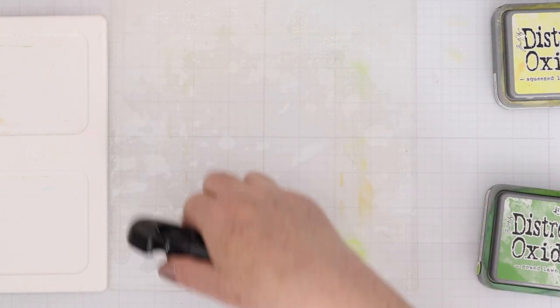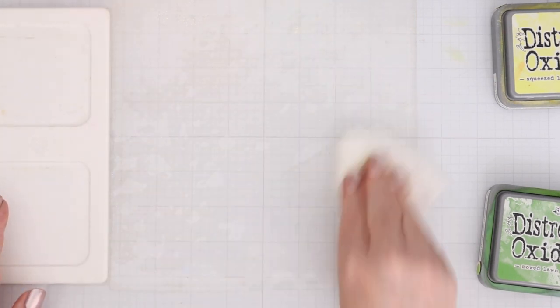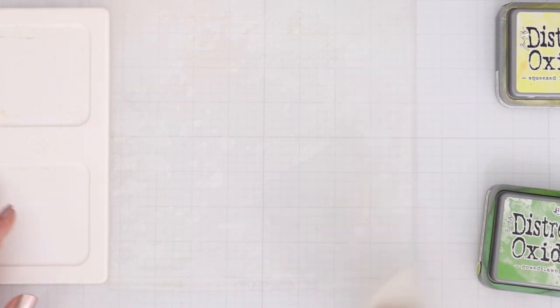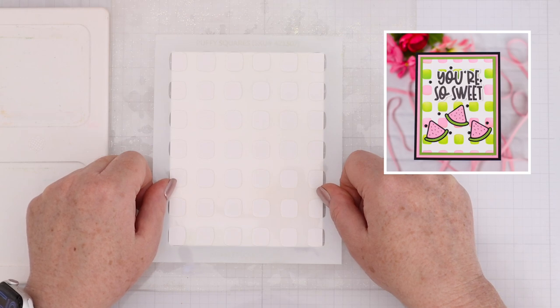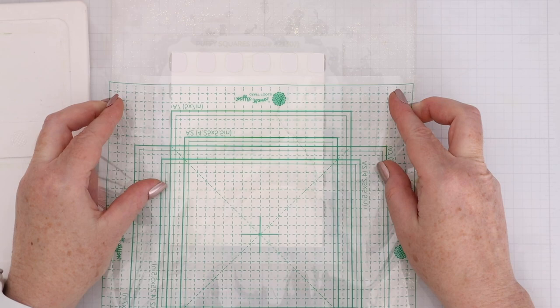Just a reminder, these grip mats, especially with distress oxide that is reactive to water, clean up beautifully. Just spritz a little water on there and I have a little towel and I can wipe off all that ink. I can't promise that that will happen with every ink that you have but that's why I like to use distress oxide ink because I know it's reactive to water and it's easy to clean.